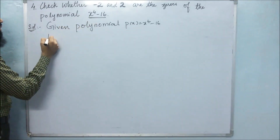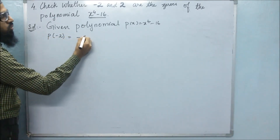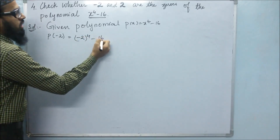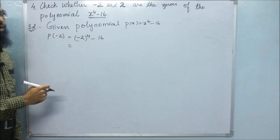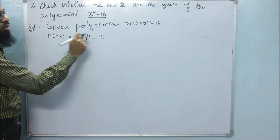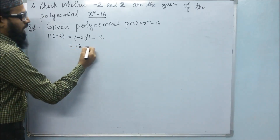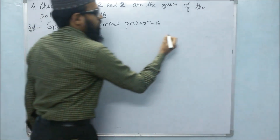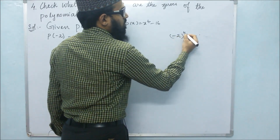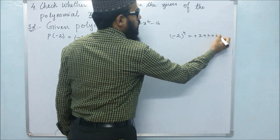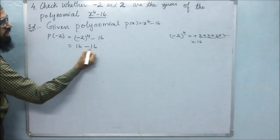Let us take P of minus 2. When we substitute, we get minus 2 to the power of 4 minus 16. Since the base is minus and the power is even, we get a plus sign. And 2 to the power of 4 means 2 multiplied 4 times: 2 into 2 into 2 into 2, which gives 16. So 16 minus 16 is 0.